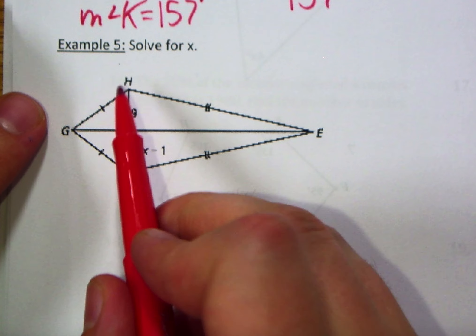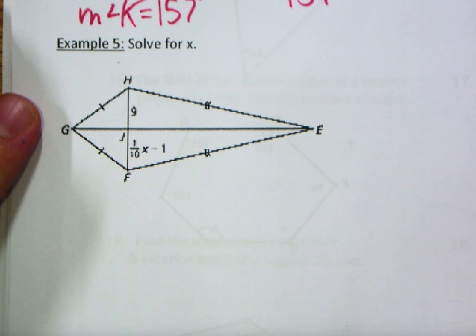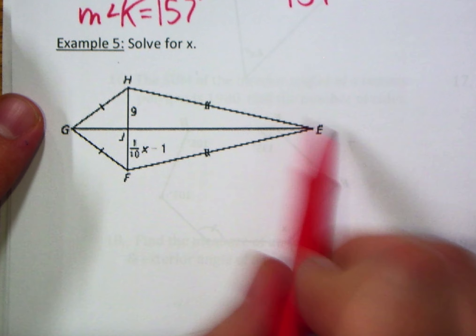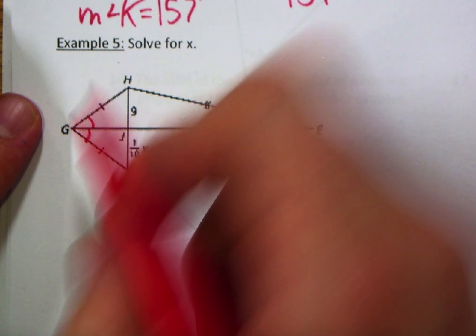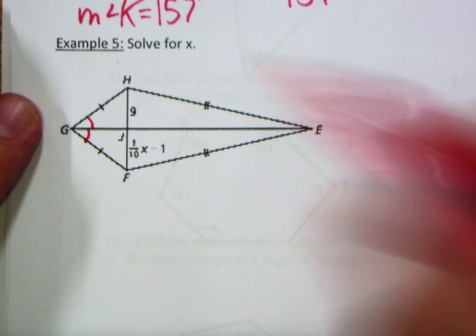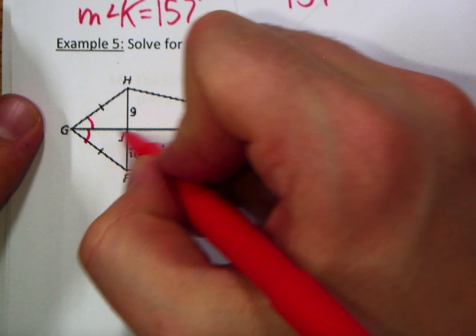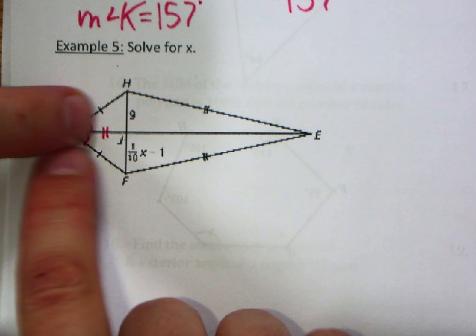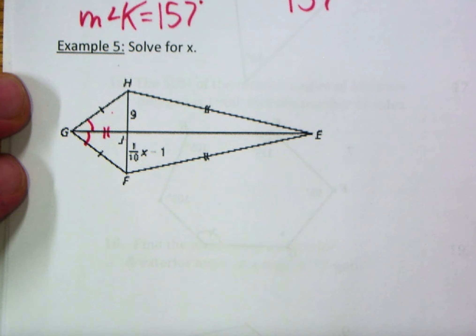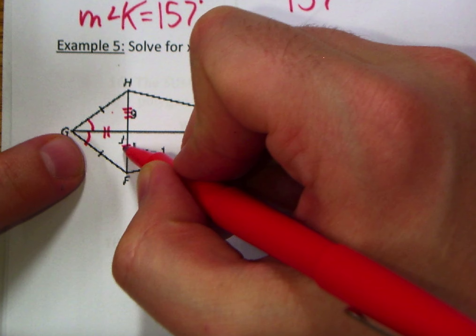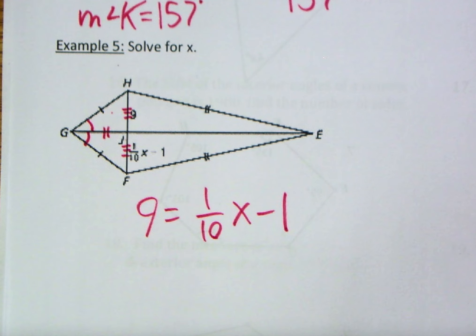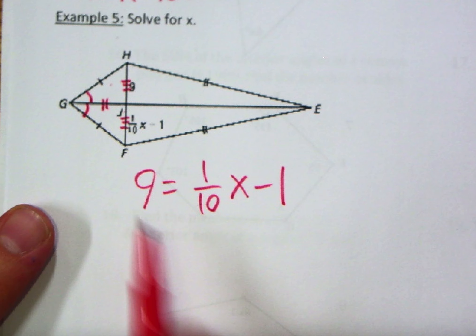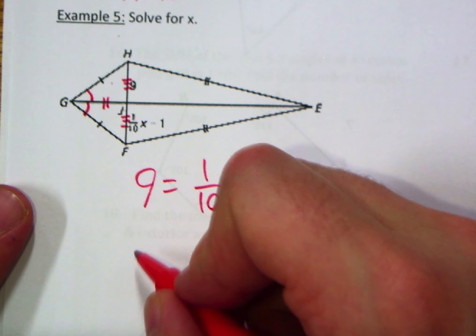For the final problem — also a kite — angles HGJ and FGJ are congruent. Looking at the small triangles on the left, they share side GJ. By SAS, those triangles are congruent, so the sides across from the congruent angles are equal. This gives us: 9 = (1/10)x − 1. Adding 1 to both sides: 10 = (1/10)x.